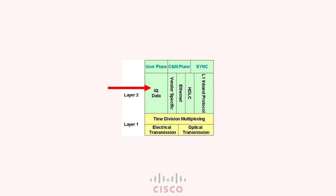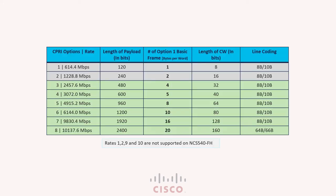Before you move on to the second episode, let me share the CPRI rates supported on the NCS540FH platform. Rates 3 to 8 are supported, which means all of those can be carried on a 10 GE interface. Our entire CPRI portfolio is built on that interface, and we don't plan to support lower rates 1 and 2, or higher rates 9 and 10, which need CPRI 1 GE and 25 GE interfaces respectively. We hardly hear about those use cases with these CPRI options.